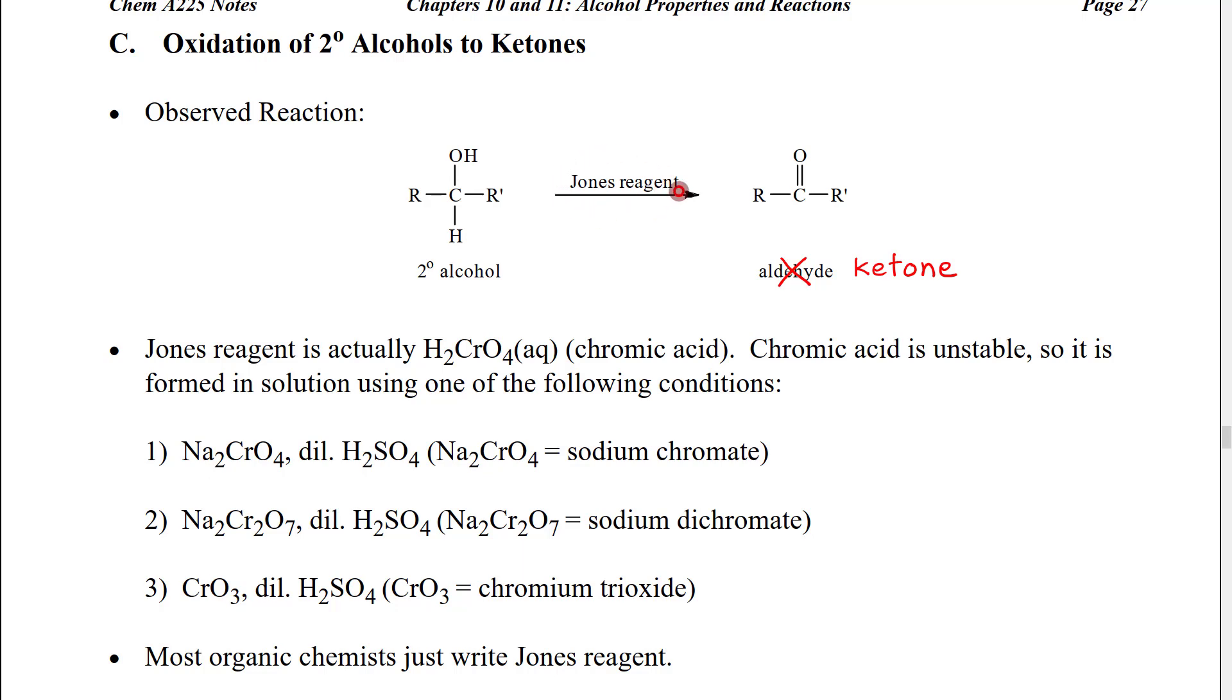So we use a reagent that has been given the name Jones reagent. Presumably the person who discovered this reagent was a scientist whose last name was Jones. Again there are specific things that are used for Jones reagent that we're going to talk about down here. But you are free to just write Jones reagent and again most organic chemists are going to know exactly what you mean.